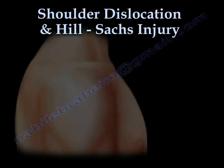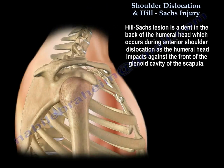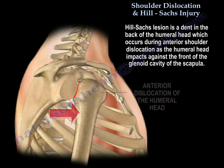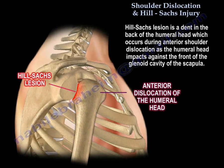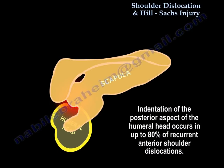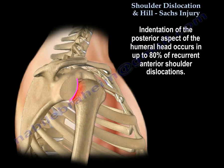Shoulder Dislocation and Hill-Sachs Injury. A Hill-Sachs lesion is a dent in the back of the humeral head, which occurs during anterior shoulder dislocation, as the humeral head impacts against the front of the glenoid cavity of the scapula. This indentation of the posterior aspect of the humeral head occurs in up to 80% of anterior shoulder dislocations.